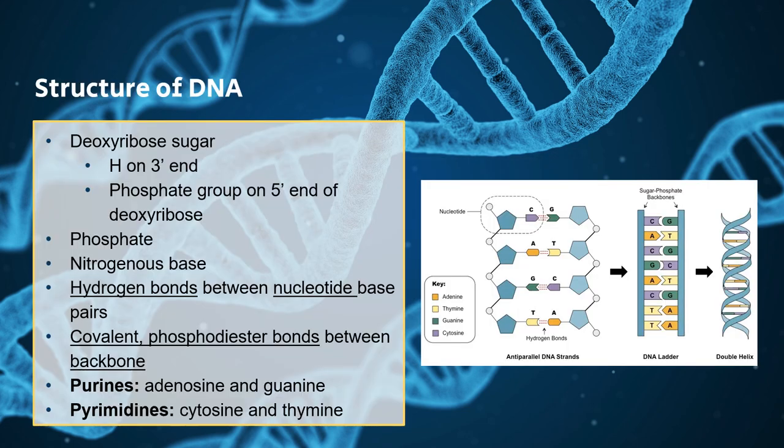So we know DNA is made up of a deoxyribose sugar, phosphate, and a nitrogenous base. And for that deoxyribose sugar, you're going to have a hydrogen on one end and a phosphate group on the other end. And so with DNA, it runs 5' to 3' on one strand, and then 3' to 5' on the other strand.